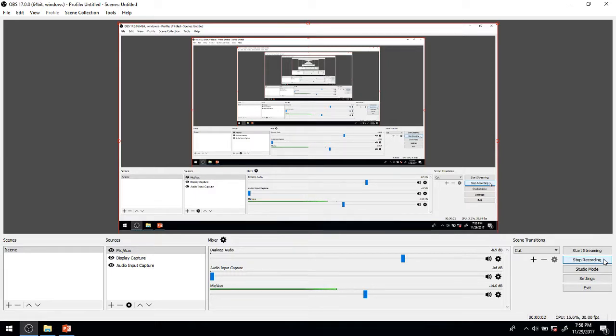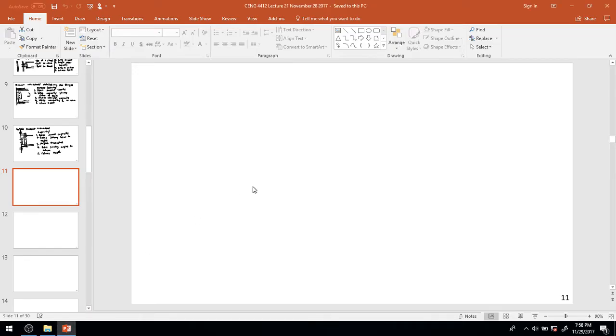Good evening, here we are yet again from the lovely section of CENG 4412 steel and concrete design. This is going to be part 2 of the 21st lecture in the video series, and here this evening we're going to move on to really looking at our first elements of structural steel connection design.